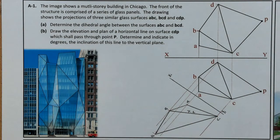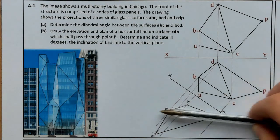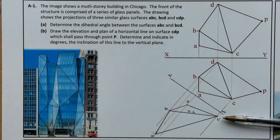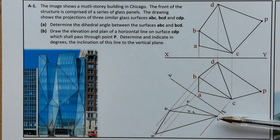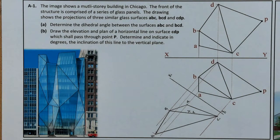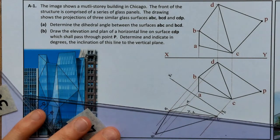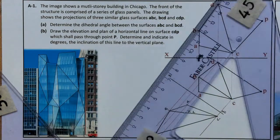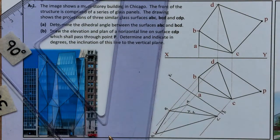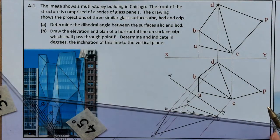Now, if you imagine standing here looking in along the line so that we see it as a point view — because we see it as a point view, we will see the surfaces A1 B1 C1 and B1 C1 D1 as edge views, giving us the angle between them. To do that, I'm going to project another auxiliary view, this time perpendicular to the line of intersection between the two.